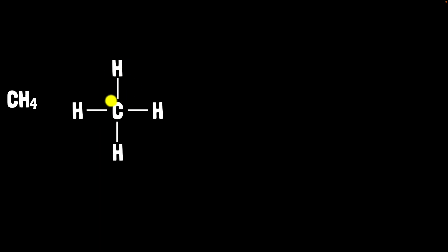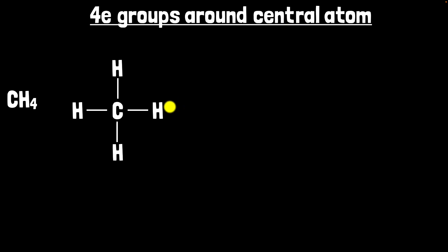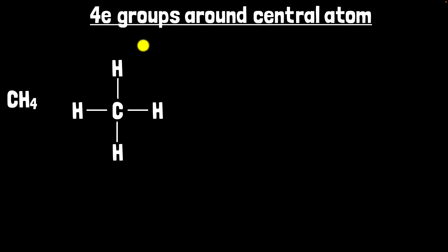For example, the electrons participating in a bond form one group. So there's a first group, a second group, a third group, and a fourth group. There are four electron groups around the central atom. You might ask why we say electron groups and not just bonds — as we'll see, it applies to other things as well, not just bonds. VSEPR says these four groups of electrons are going to repel each other and arrange themselves as far away from each other as possible, making the biggest angle they can.